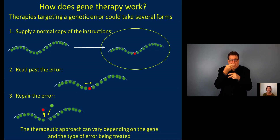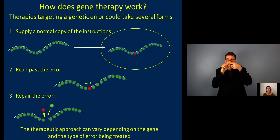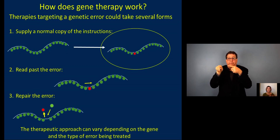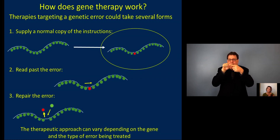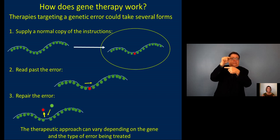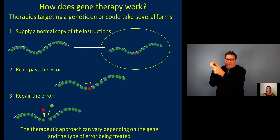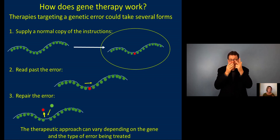A second way people are approaching this is figuring out ways to read past the error. The genetic information is arranged linearly, which goes from upstream on the left to downstream on the right. But during the process of translation, there are a few time points where an intervention could happen that would help skip over that error and proceed past it toward the good protein coding information on the other side of the mistake.